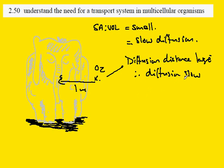Now the diffusion is so slow that it can't support respiration. So in other words, the oxygen wouldn't get to the cells fast enough.